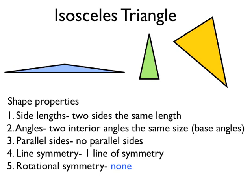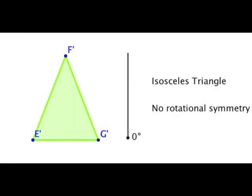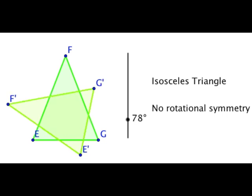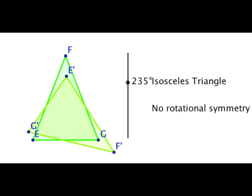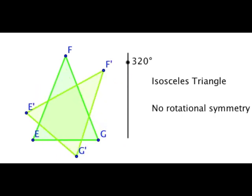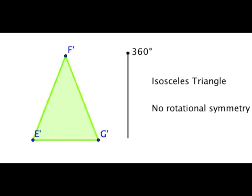Let's have a look at why it has no rotational symmetry. Here's an isosceles triangle that I can rotate about its centre. Let's do one whole rotation and see if at any point it looks like the original shape in the original position. As I rotate the shape round through one whole rotation, it doesn't look like it does in the original position — and only when I have gone one whole rotation does it look as it did originally. So at no point during that rotation did it look like the original shape, which is why it has no rotational symmetry.